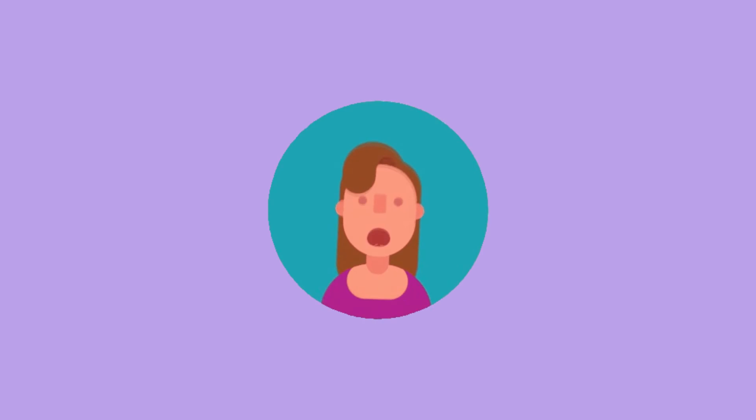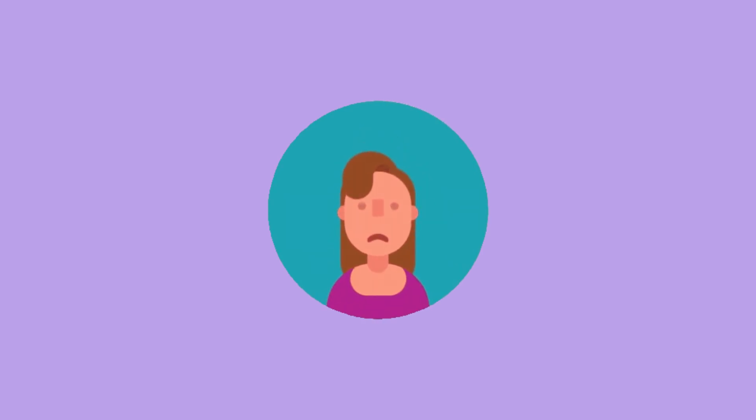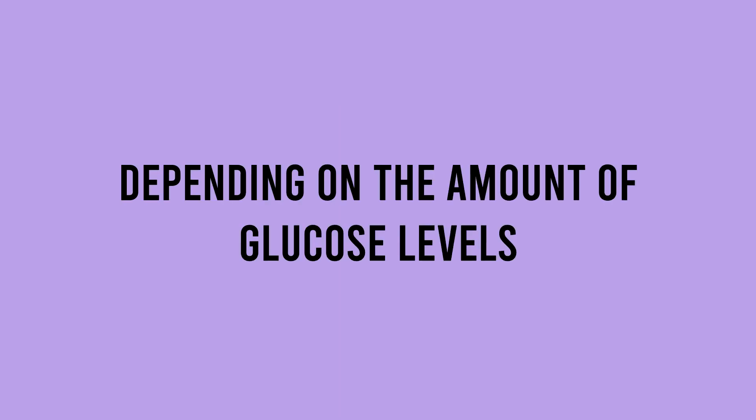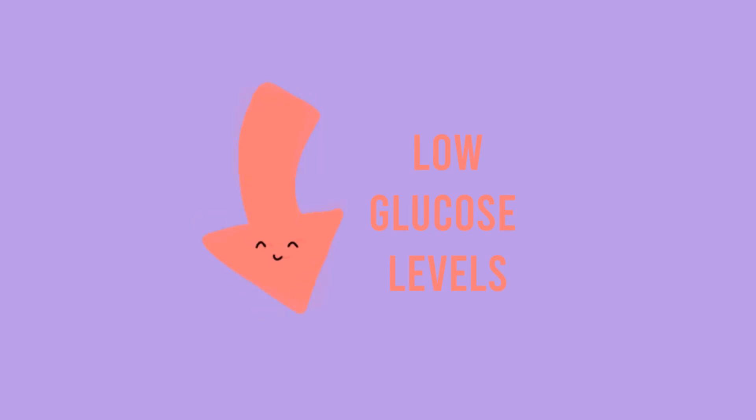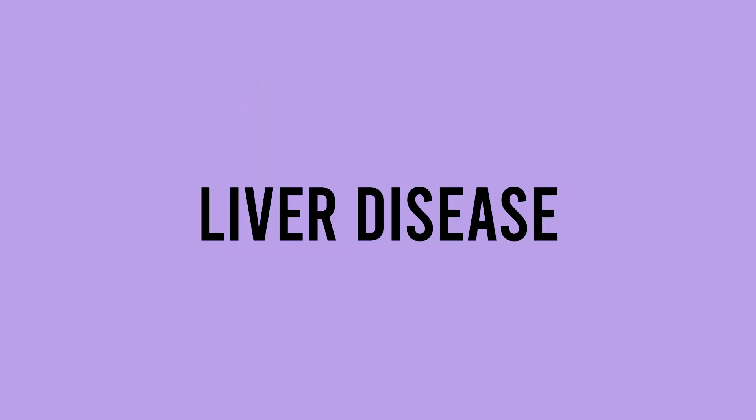Non-regulation could lead to several disorders depending on the amount of glucose levels. High glucose levels lead to diabetes, hyperthyroidism, and pancreatitis. For low levels, it leads to hypothyroidism, liver disease, and starvation.